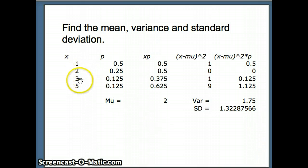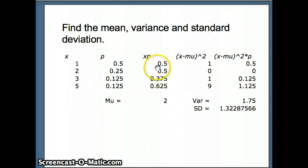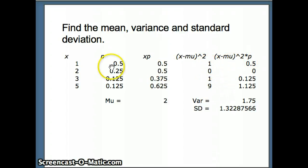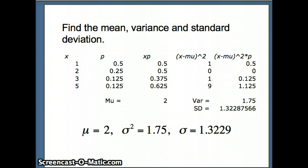With x column 1, 2, 3, 5 and p column 1/2, 1/4, 1/8, 1/8, we compute xp: 1 × 1/2 = 0.5, 2 × 1/4 = 0.5, 3 × 1/8 = 0.375, 5 × 1/8 = 0.625. Adding those gives a mean of 2. For x minus mu squared: 1, 0, 1, 9. Multiplying by p and summing gives a variance of 1.75. The standard deviation is the square root of 1.75, which is approximately 1.32288. Our theoretical solutions are mu = 2 and sigma = 1.3229.